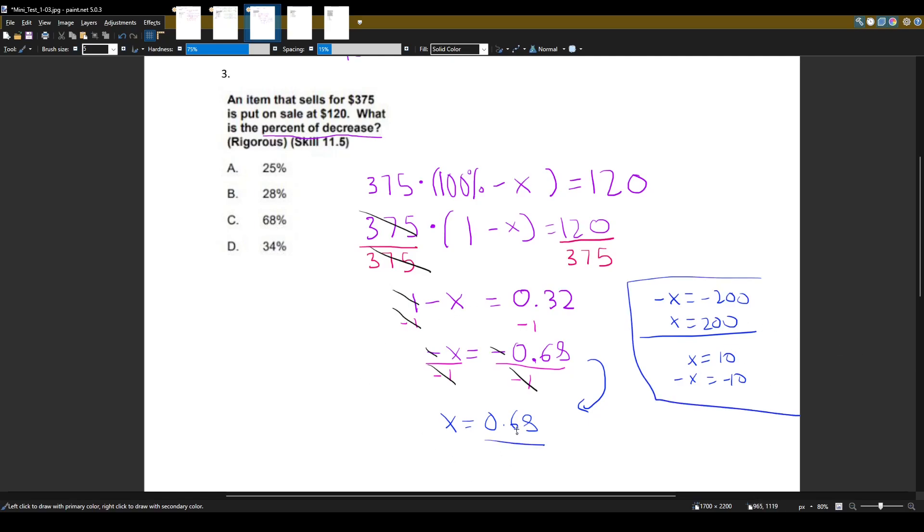So X equals 0.68. This is a decimal, so we want to change it back to percent. To change it back to percent, instead of dividing by 100, you multiply it by 100. That gives us 68 percent. Or we can move the decimal place two places to the right because we're going decimal to percent. That also gives us 68 percent. And that is answer choice C.